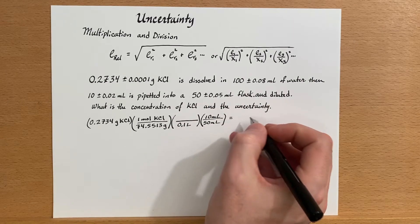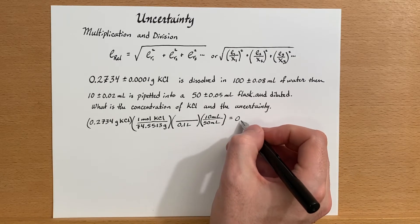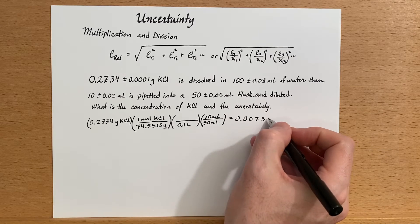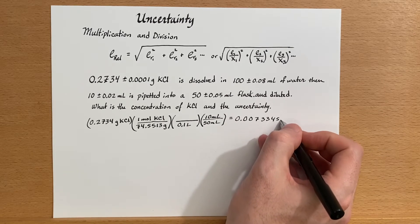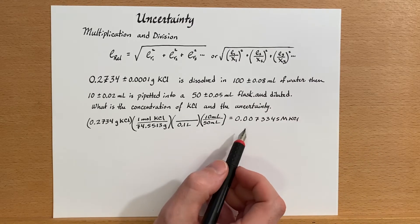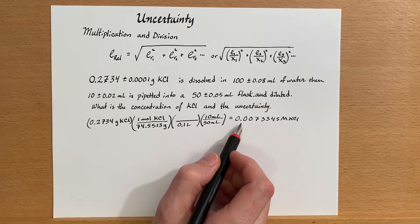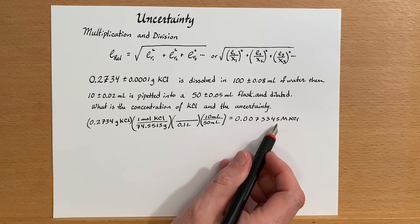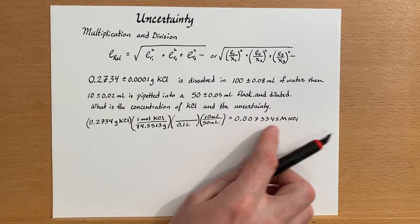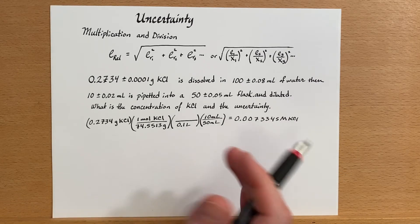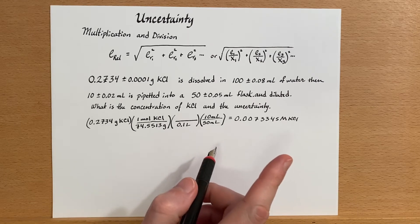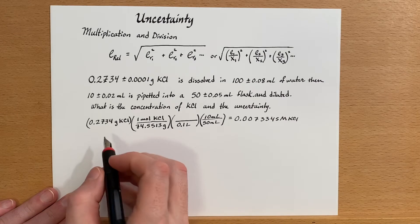So anyway, sometimes you can do little tricks like that. So I've calculated that in the last flask we will have a concentration of 0.0073345 molar. And I've just added on plenty of significant figures in here, and we'll actually determine how many significant figures we have once we do our error calculation. So here we go.